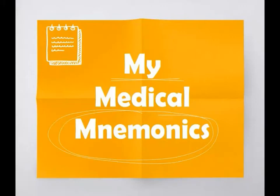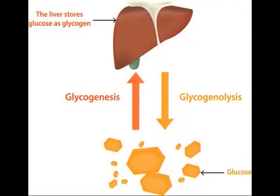Hello viewers, welcome to the channel 'My Medical Mnemonics'. Now we are going to see a mnemonic to remember names of glycogen storage diseases. Glycogen storage diseases are metabolic disorders caused due to deficiency of enzymes which are responsible in glycogen synthesis, glycogenolysis, or glycolysis. Due to deficiency of these enzymes, there is a problem in storage of glycogen in the liver or muscle.